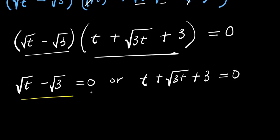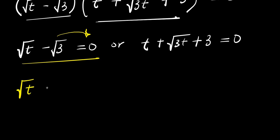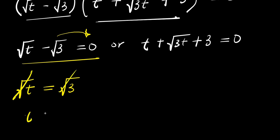For the first equation, I move root 3 to the other side: square root of t equals positive root 3. Squaring both sides, the square root eliminates and I have t equals 3. Let this be t₁, so this is my first solution.